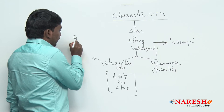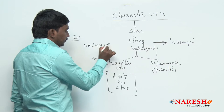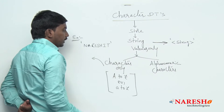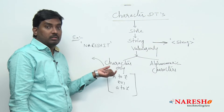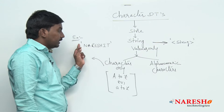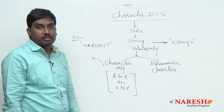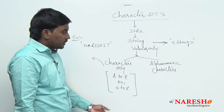For example, take the expression 'Naresh IT'. In this expression we have only characters — alphabetic characters. This expression should be sent along with string representation using single quotes. Carefully observe: in this case I am taking only characters. These characters are sent along with my single quote representation, and once sent, it is accepted. This is what we call character-only data.